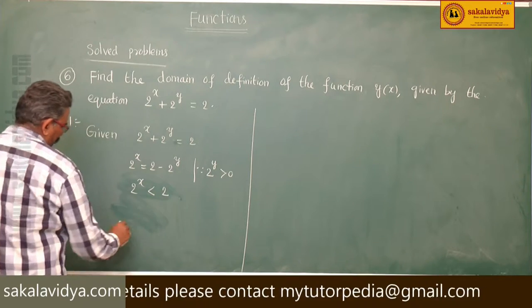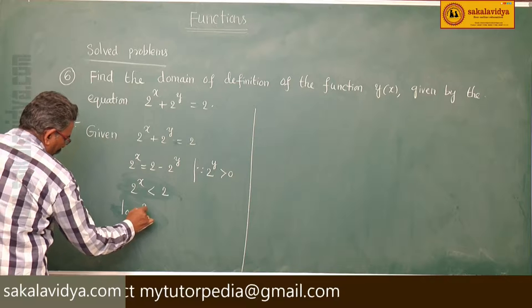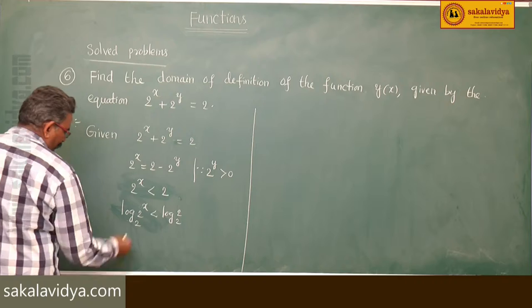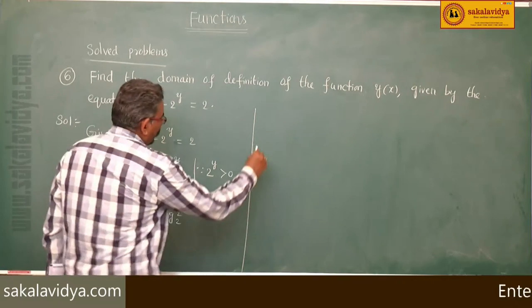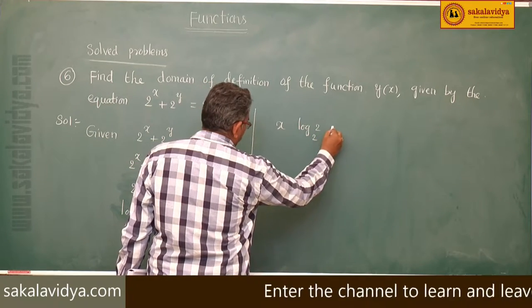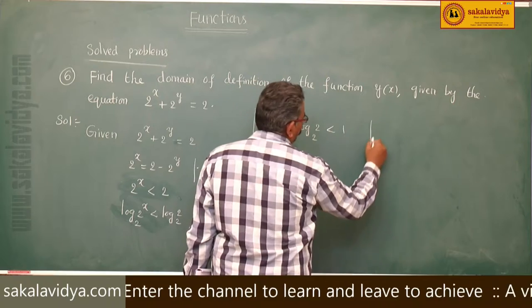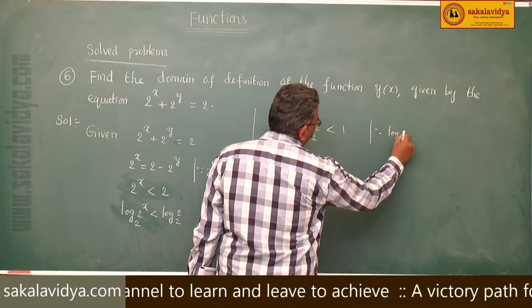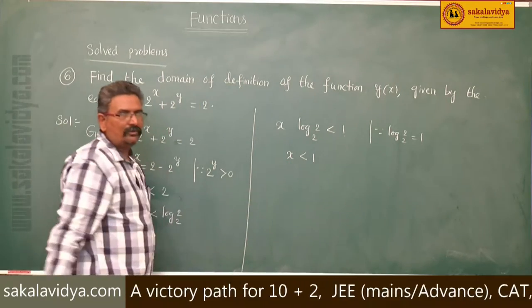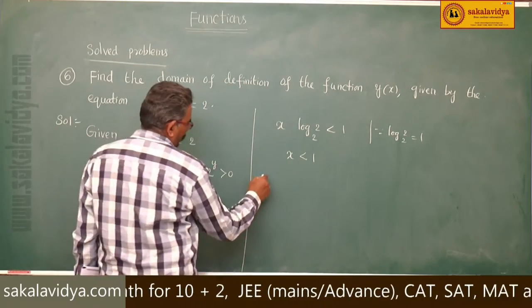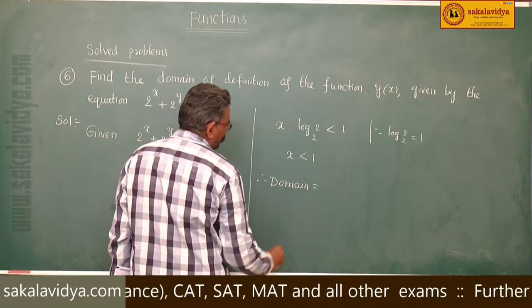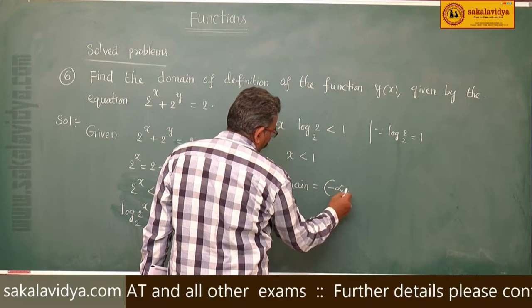Apply log: log of 2 power x to the base 2 is less than log 2 to the base 2. By the power rule, x times log 2 base 2 is less than 1, and log 2 base 2 is 1. So x is less than 1, which is the domain. Therefore, domain equals minus infinity to 1.